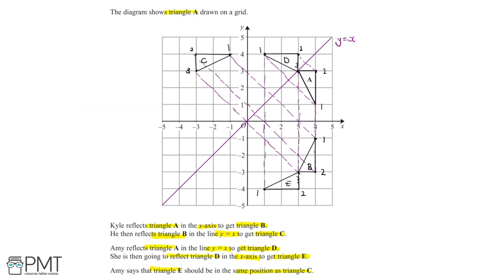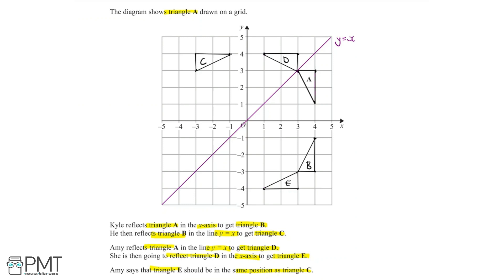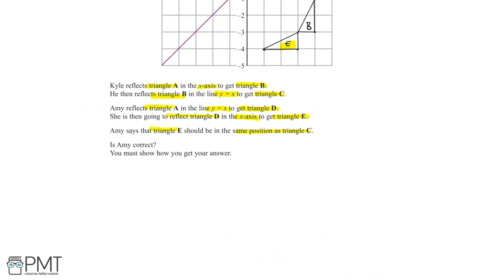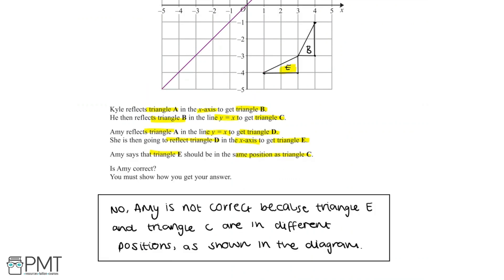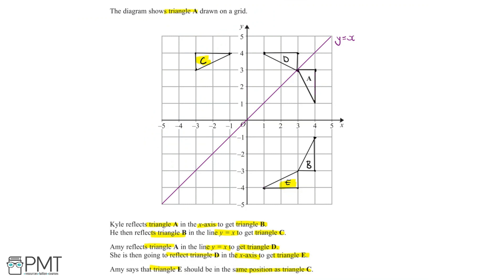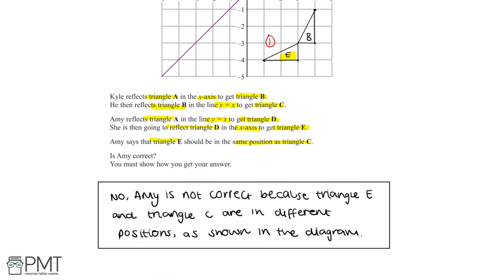Now we'll remove all the dotted lines so we can clearly see triangles A, B, C, D, and E. The question asks whether or not Amy is correct — Amy says triangle E should be in the same position as triangle C. Looking at triangle E and triangle C, we can see they are not in the same position, so Amy is incorrect. This question is worth 3 marks: the first for the correct position of triangle C or E, the second for the correct position of triangle B or D, and the third for a conclusive statement that Amy is not correct, supported by evidence that triangle E and triangle C are in different positions as shown in the diagram.